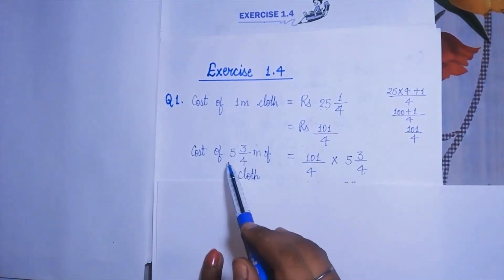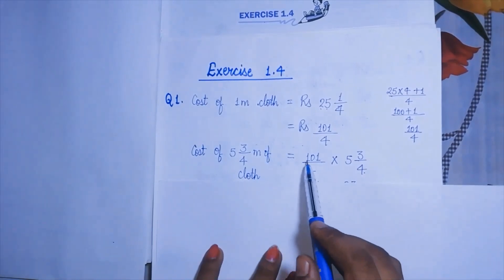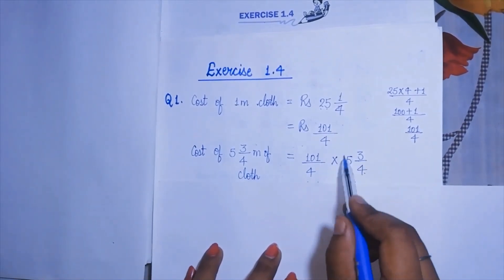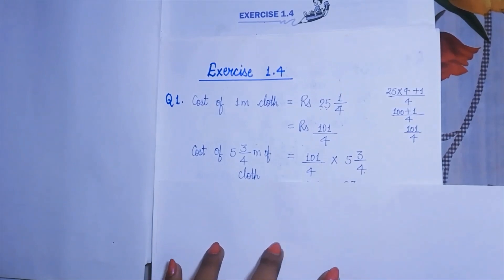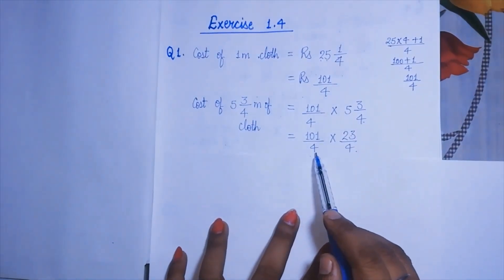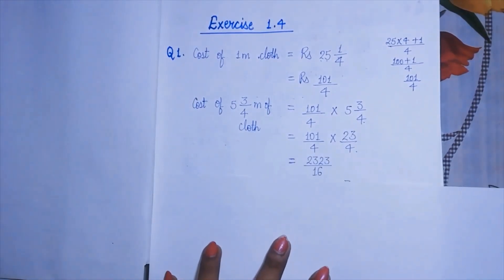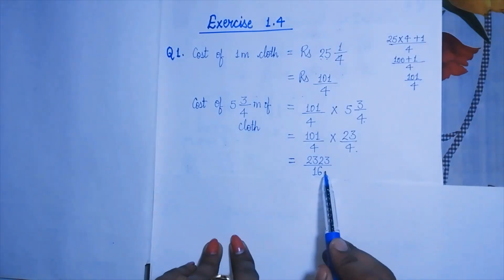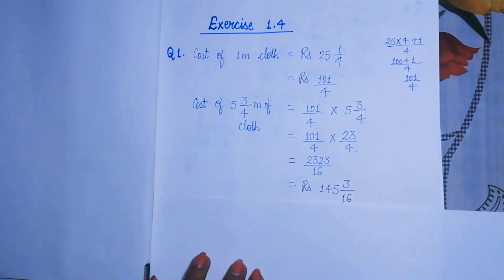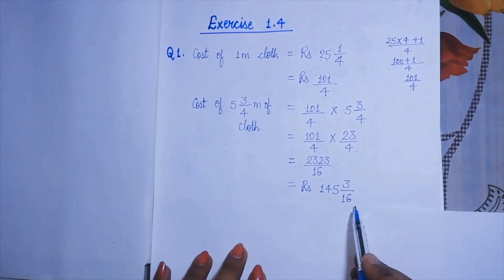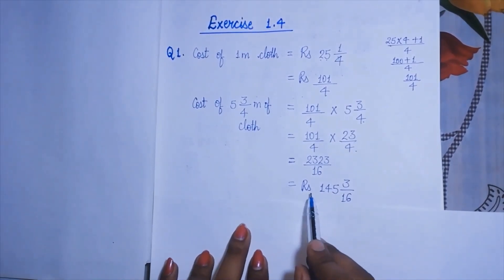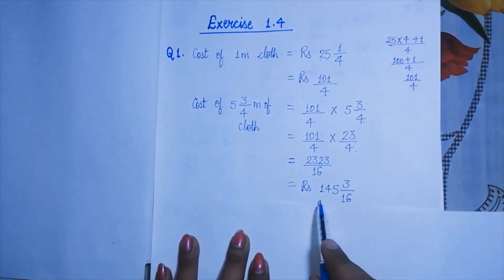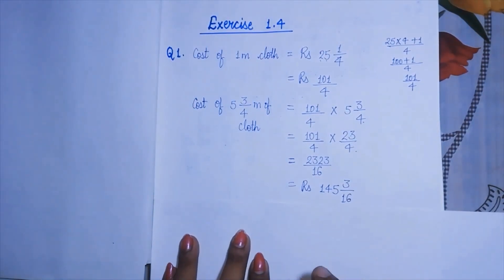Then we find the cost of 5 and 3/4 meters of cloth. We multiply the price — converting 5 and 3/4 to a simple fraction gives 23 by 4. So we have 101 by 4 into 23 by 4. After simplification we get 2323 by 16, which as a mixed number is 145 and 3/16. Hence the cost of 5 and 3/4 meters of cloth is rupees 145 and 3/16. This is your final answer.